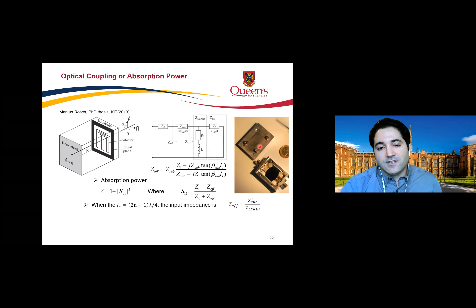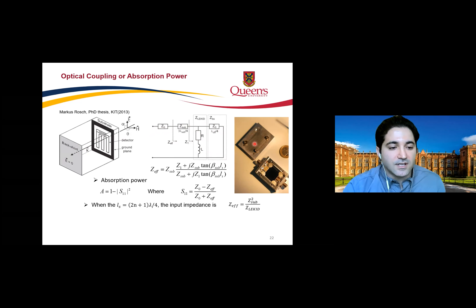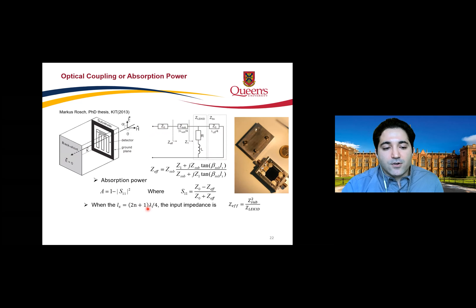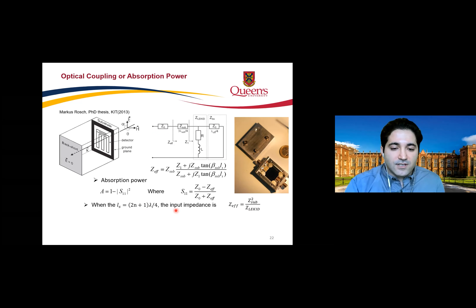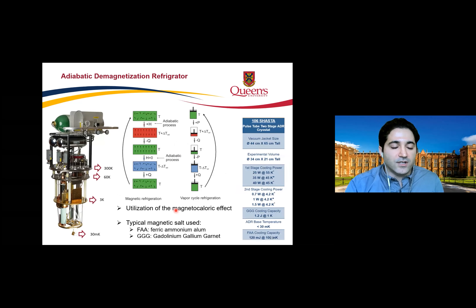The back-short is effectively the lid of the aluminum box. The distance between the MKID and the back-short must be on the order of a quarter wavelength of the light you are absorbing and measuring. This is an important consideration when mounting your MKIDs inside the aluminum housing.